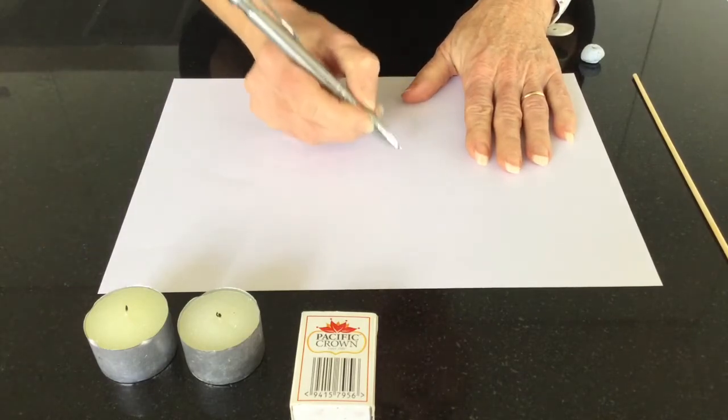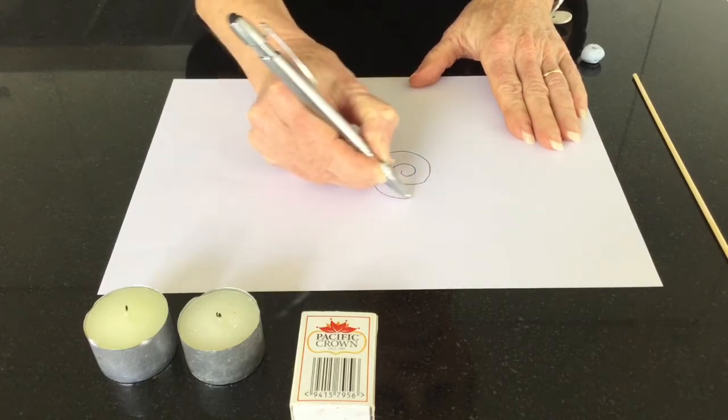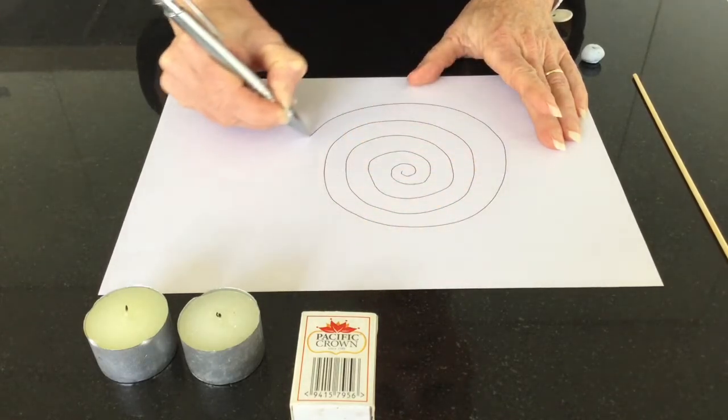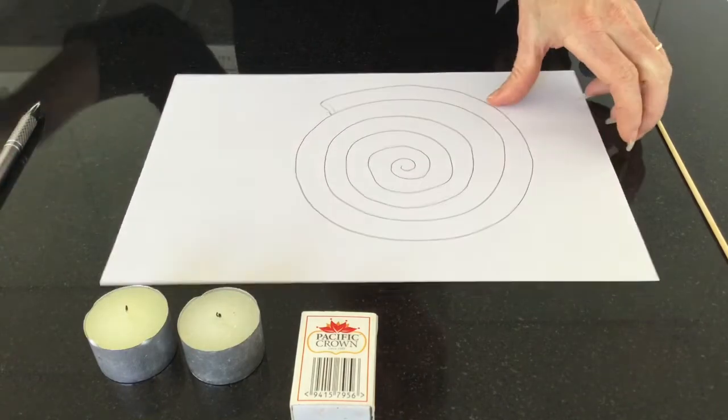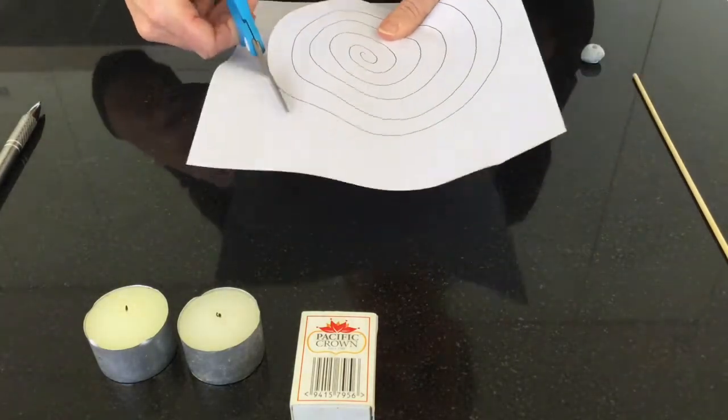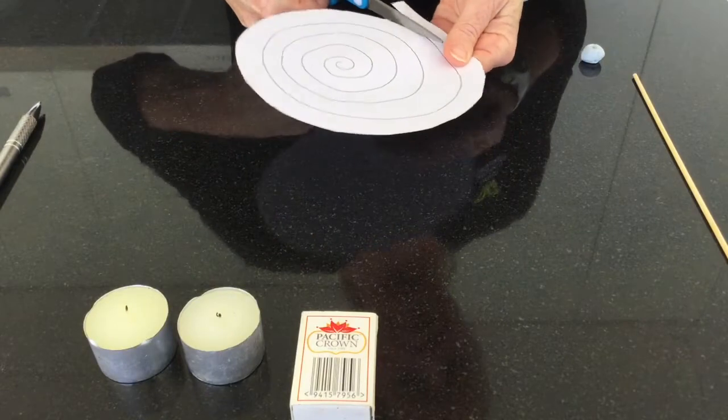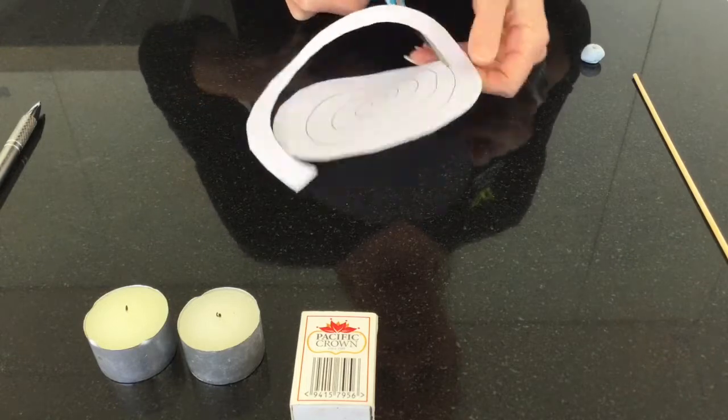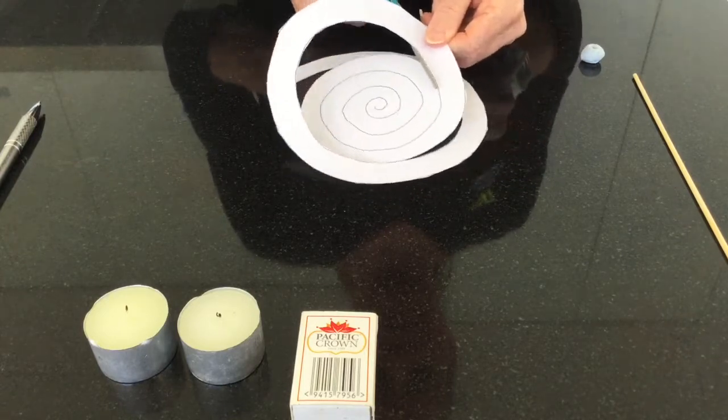So I've got our piece of paper. On it I want you to draw a spiral. I want you to cut that out.